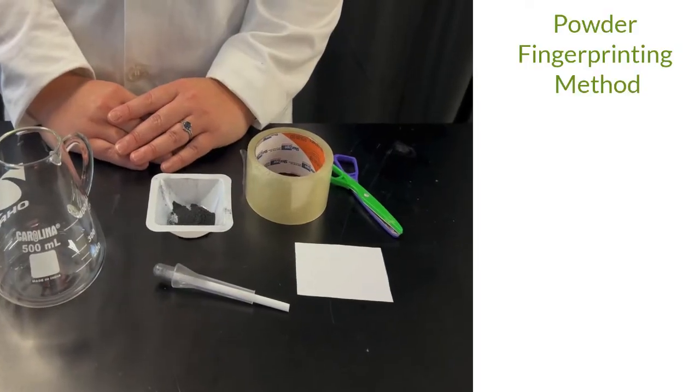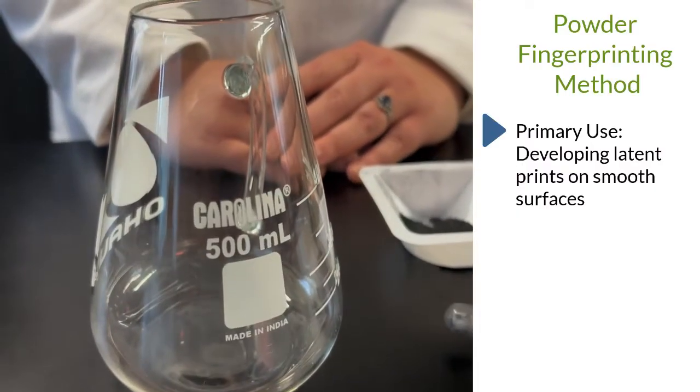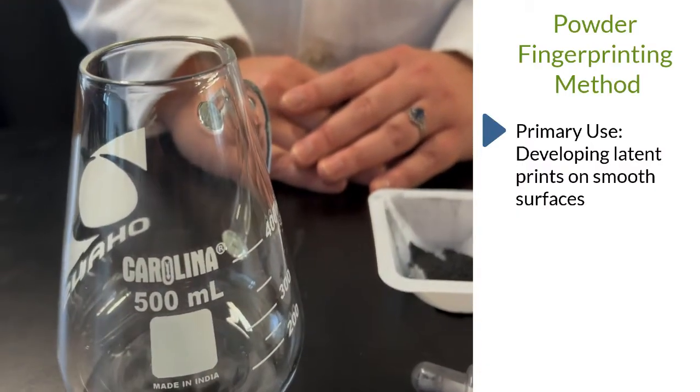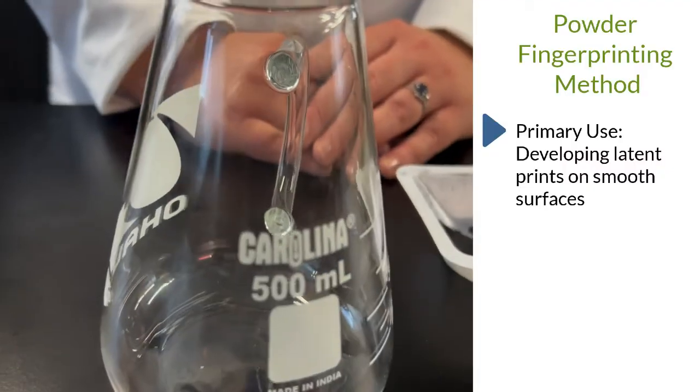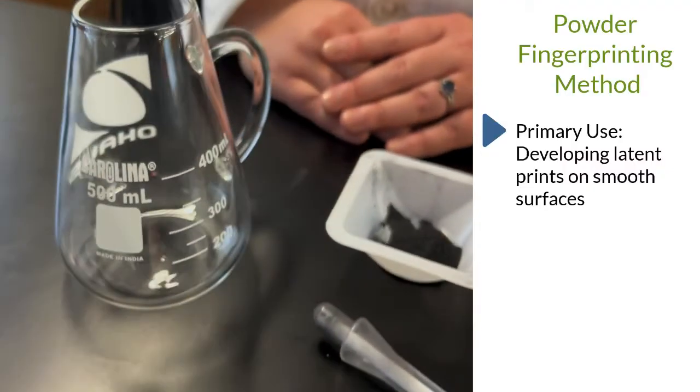Fingerprinting with powders is used for developing latent prints on smooth surfaces such as glass. Applying powders can make latent prints not visible to the naked eye visible and cast prints in a material that can be lifted from a surface for detailed analysis.